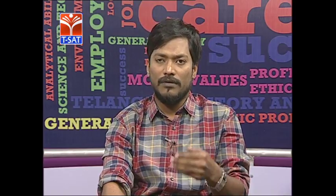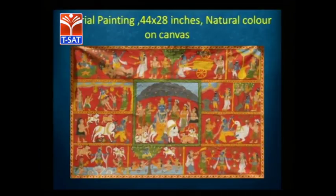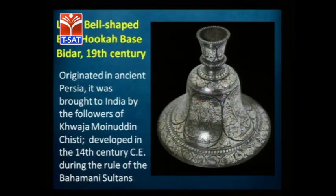Cherial painting is named after the village Cherial in Warangal. It is done on cloth using natural colors and gum arabic. It is actually a scroll painting. Nowadays you get squarish paintings, which was not the case — these paintings were not supposed to be sold; they were supposed to be used for narratives.